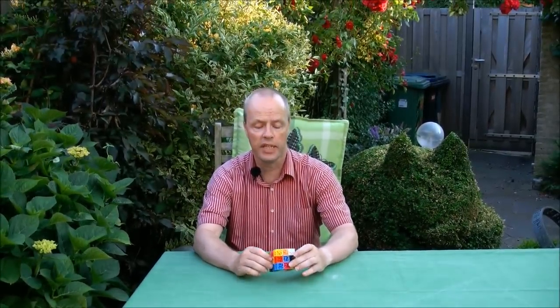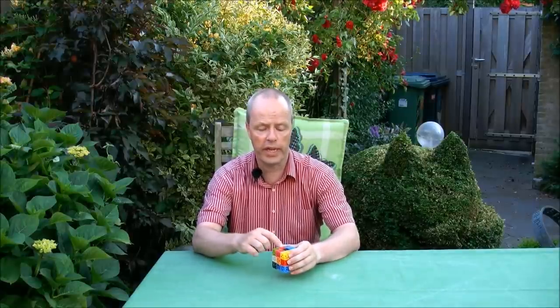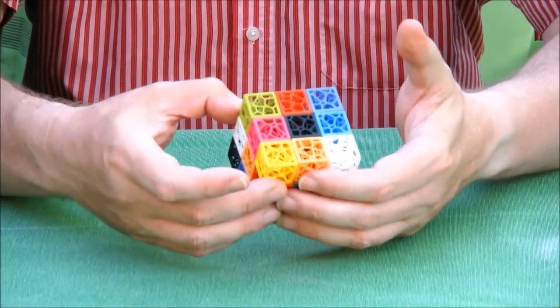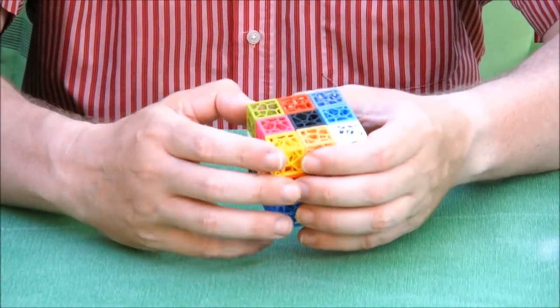Hi, I'm Oscar van Deventer, and this is the Bony Cube. Bony Cube is a Rubik's cube, but with a bone texture. The bone texture makes it very light and hollow, but very strong at the same time.